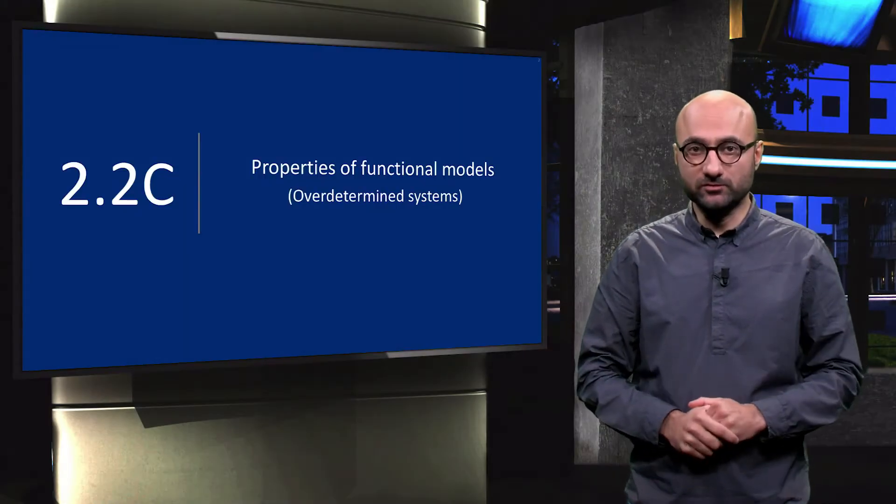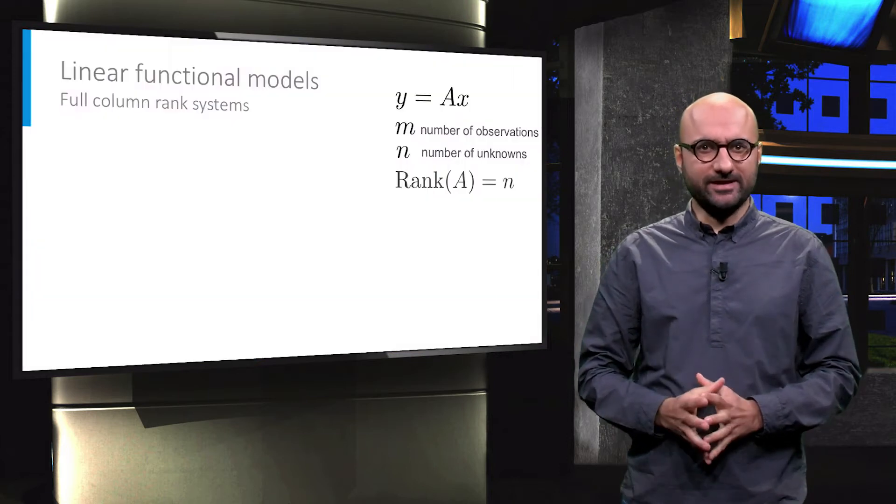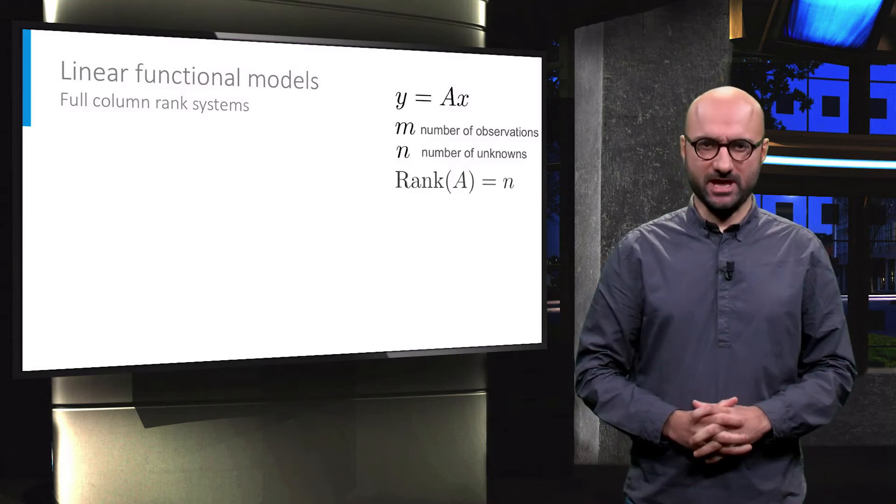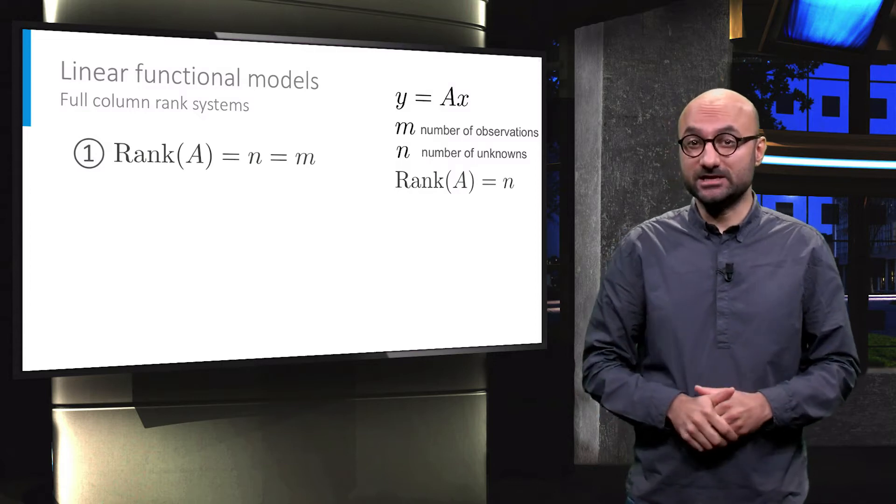Now let's focus on the full column rank systems. In the systems with the rank of A equals the number of unknowns, or n, two scenarios can happen. Either the rank of the m by n matrix A is equal to both m and n, or the rank of A is equal to n but smaller than m.